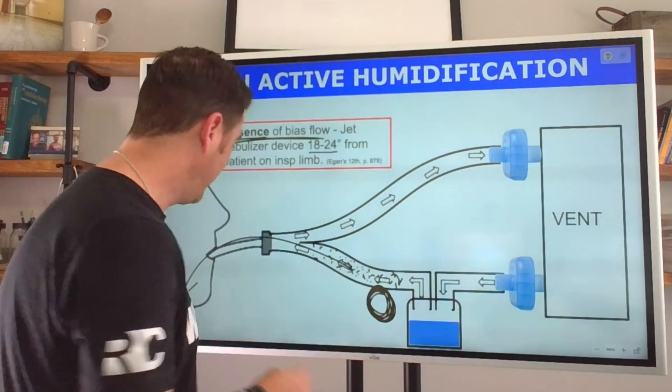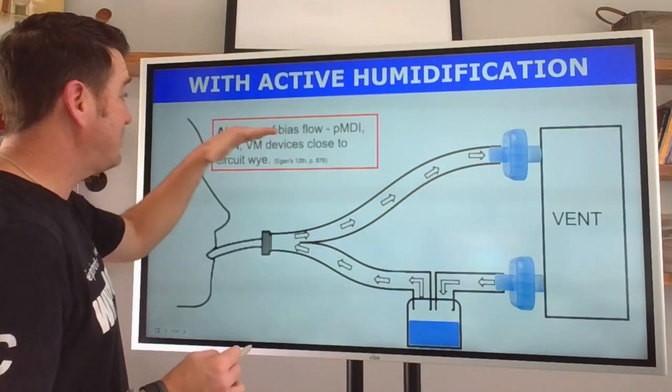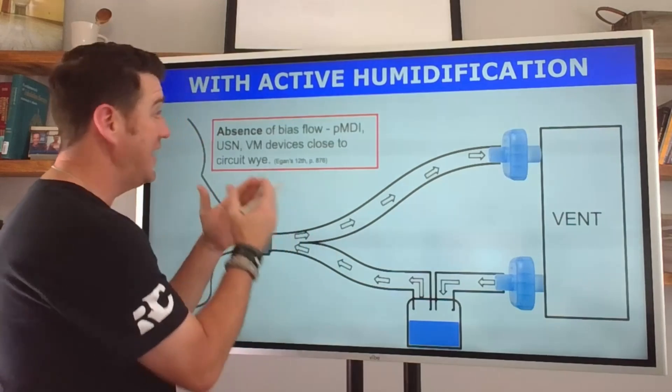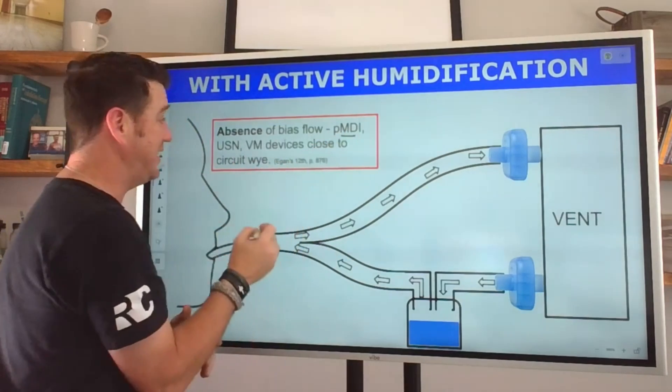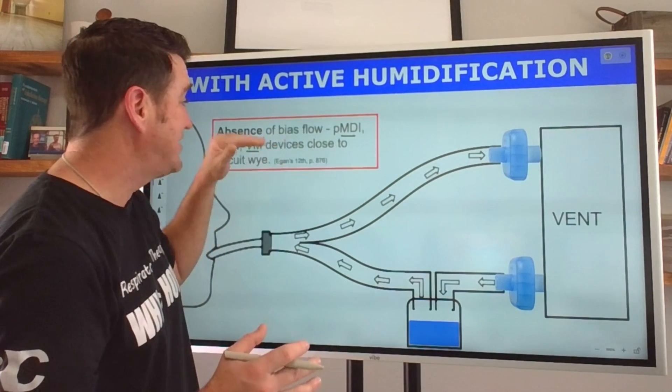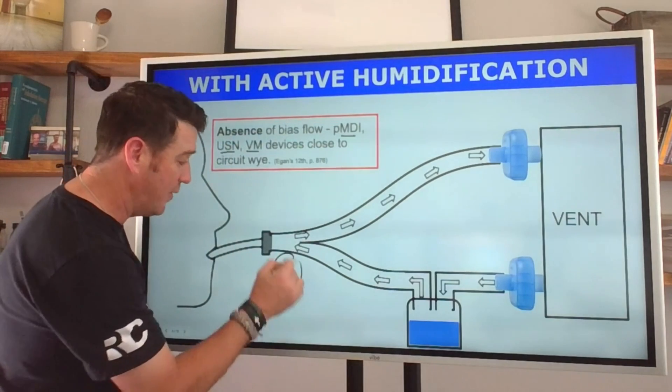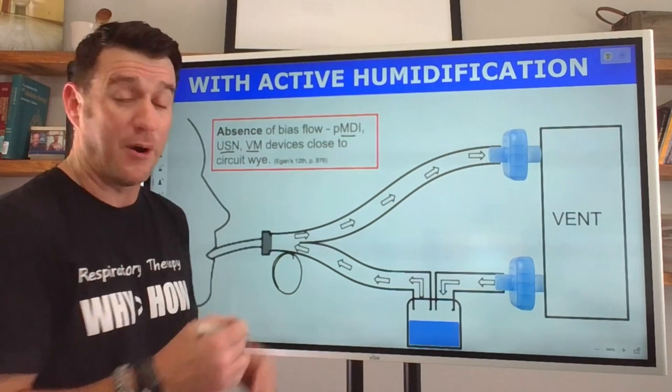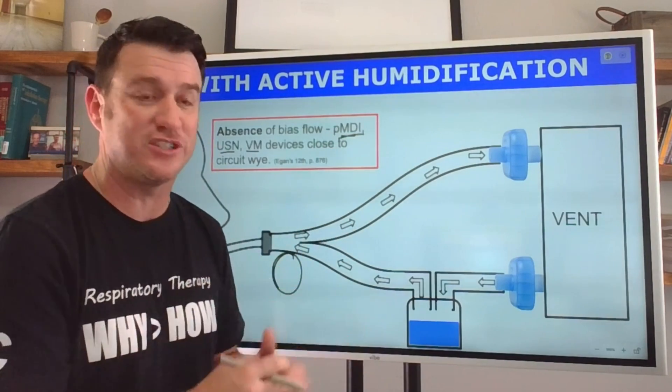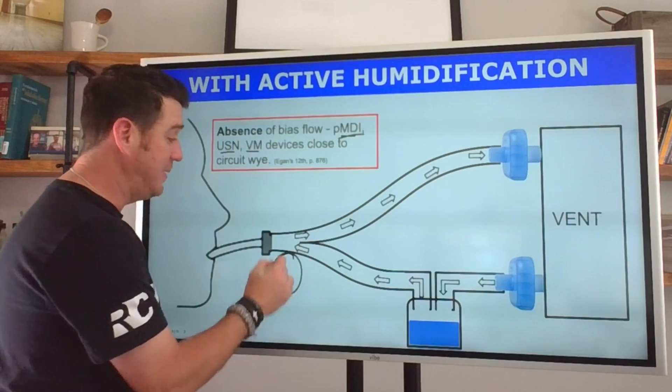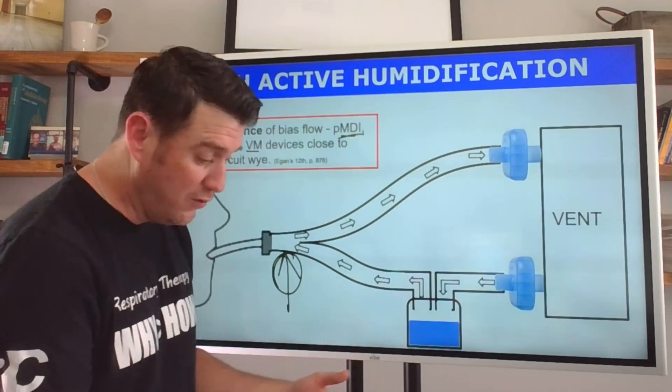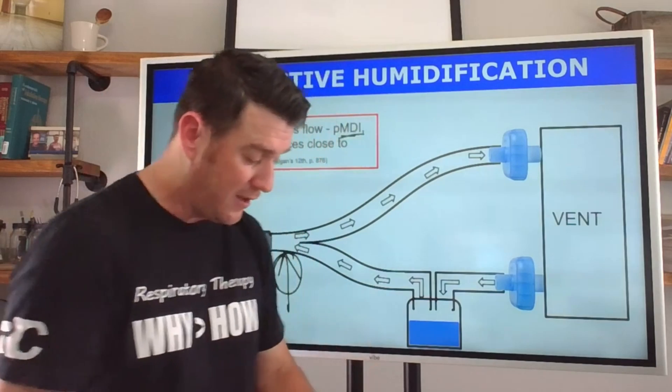In the absence of bias flow, in contrast to what we just saw, what they find and what they state is that pressurized MDIs, ultrasonic nebulizers, and vibrating mesh devices should be placed closer to the circuit wye. The particles are created smaller. MDI you're going to get that one actuation of that aerosol therapy. These devices should be placed closer to the patient at the circuit wye and that shows an improved deposition.